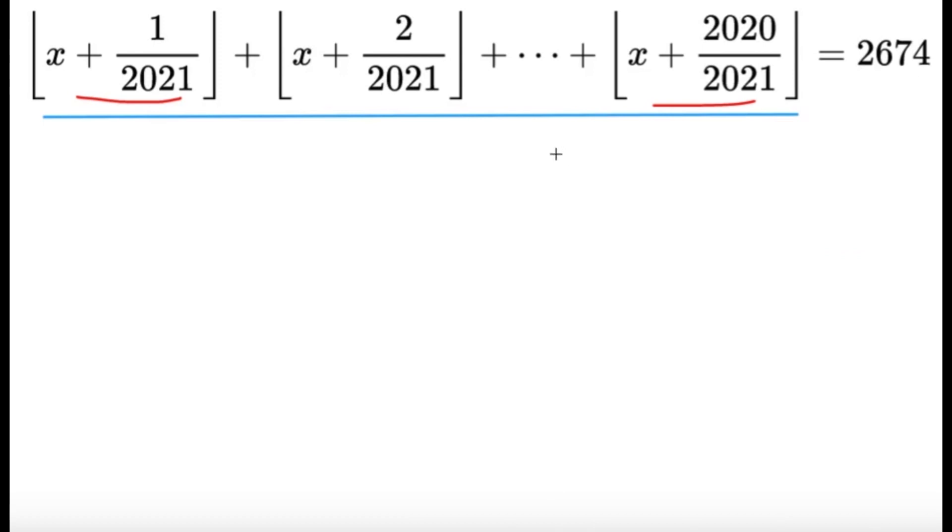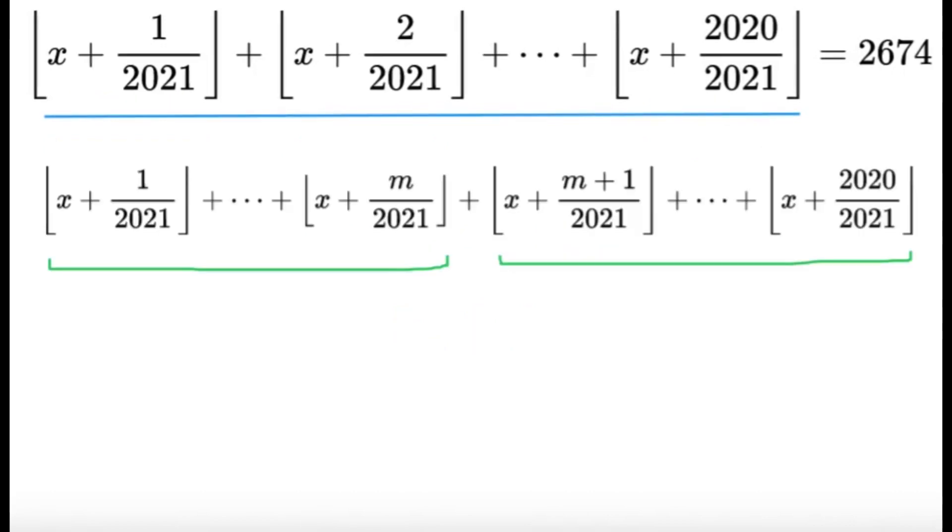Let's talk about the first case. Let's say case one, all the floor functions are the same. If that's the case, it's just a matter of letting each of these equal to K. Add 2020 of these, so 2020 times K is going to equal 2674. The restriction here is that K is an integer. So 2020 times K equals 2674. I can solve for K, but obviously K will not be an integer in this case. So I think it would be impossible here for us to have all of these floor functions to be of the same value. So let's move on to the next case.